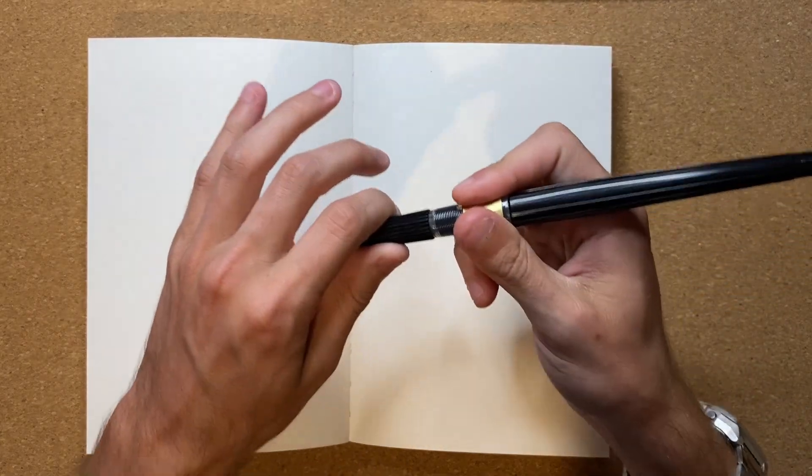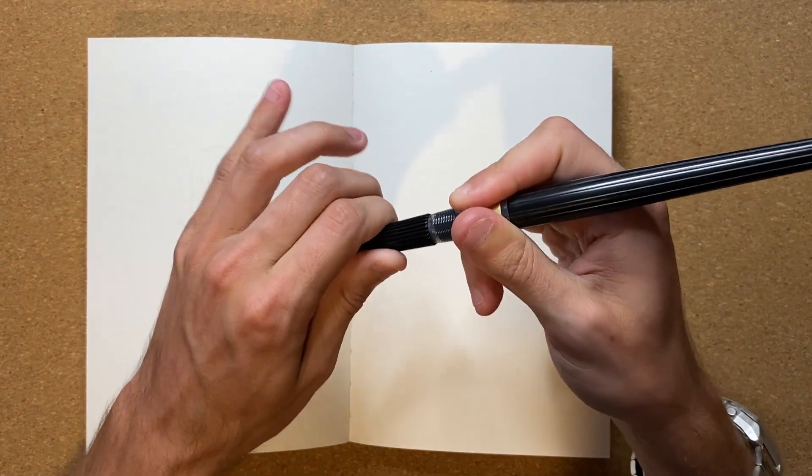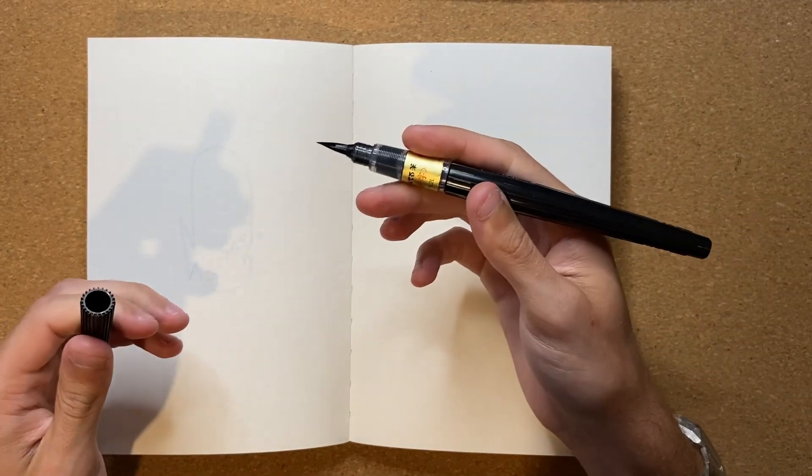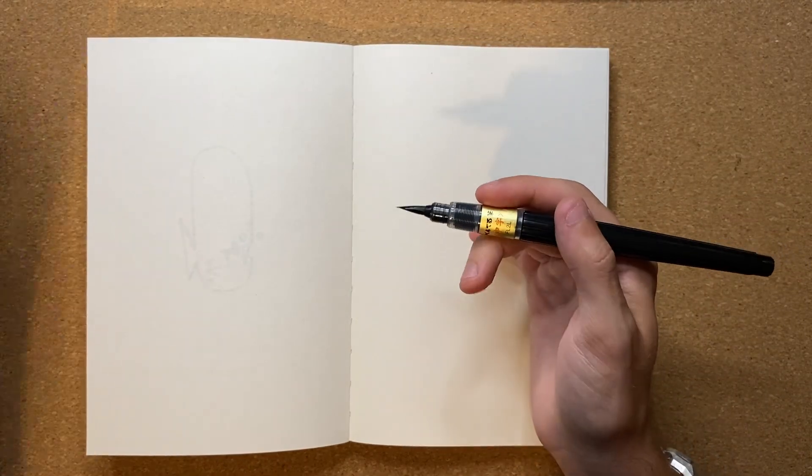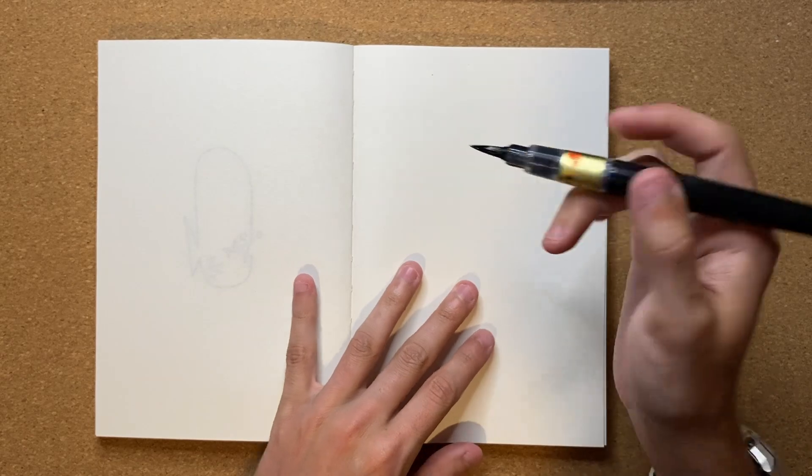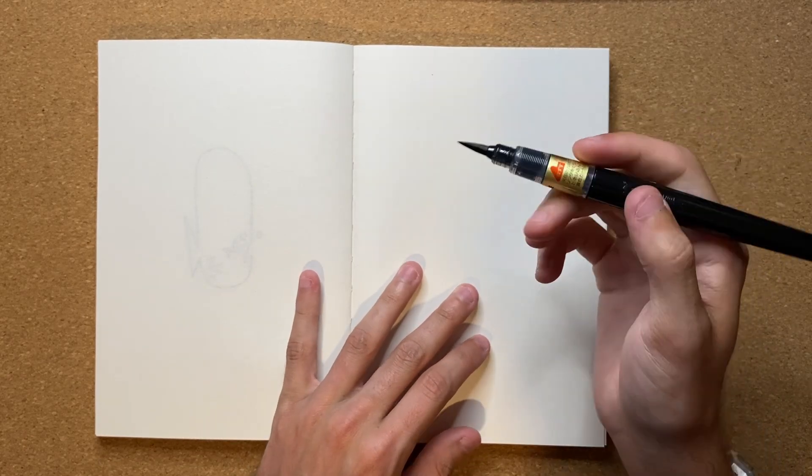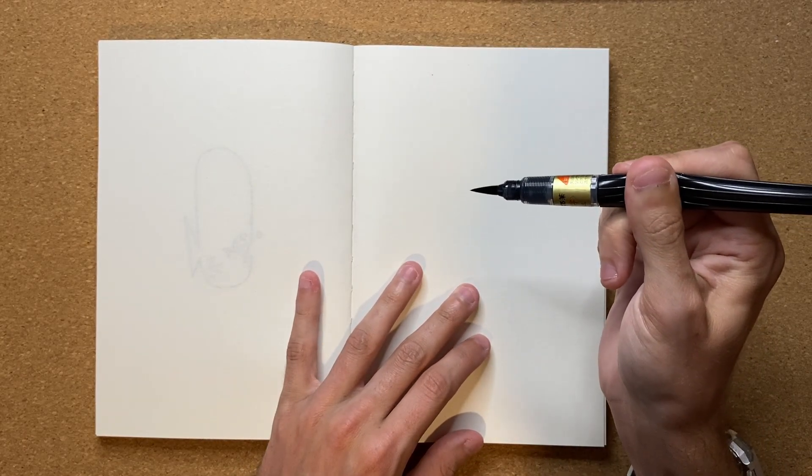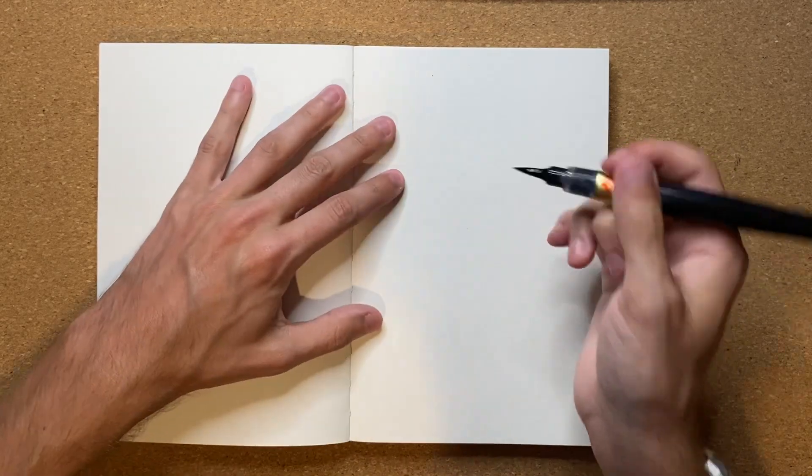But nonetheless, let's go ahead and get to drawing. Although first off, I should probably get the cap off my Japanese calligraphy pen. Now that I've gotten the cap off, I'm gonna shake it up and get some ink in there. There we go, all good to go.